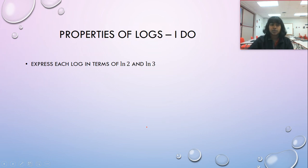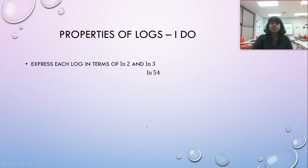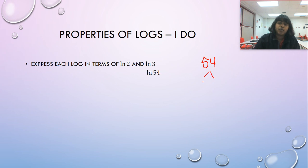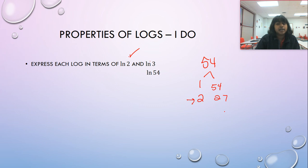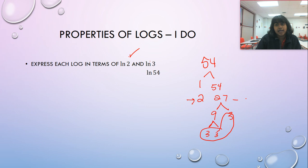This problem says express each log in terms of the natural log of two and the natural log of three. Looking at the natural log of 54, we can break 54 up using its factors. We know two and 27 are factors of 54. We already have the natural log of two. For the natural log of three: 27 is three times nine, and nine is three times three, so 27 is three cubed. So we're already in terms of natural log two and natural log three.